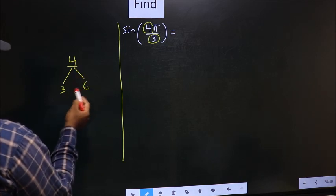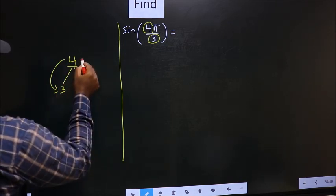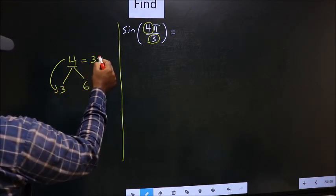That is 3 and 6. Now 4 is close to which multiple? 4 is close to 3. So 4 should be written as 3 plus 1.